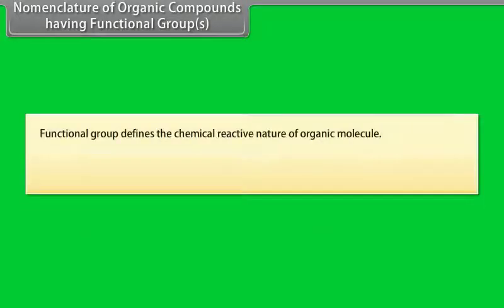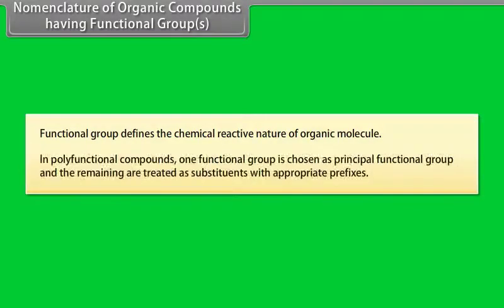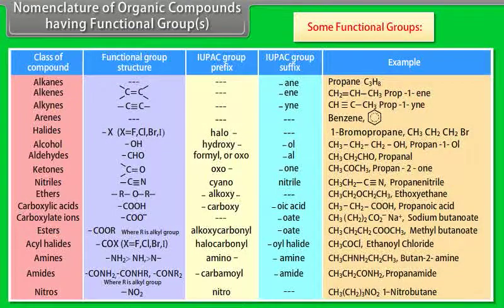Nomenclature of organic compounds having functional groups. A functional group defines the chemical reactive nature of an organic molecule. In polyfunctional compounds, one functional group is chosen as the principal functional group, and the remaining are treated as substituents with appropriate prefixes. Some functional groups are given in the table below.